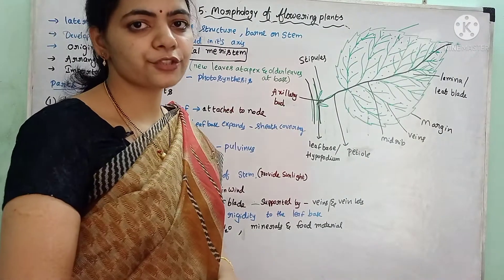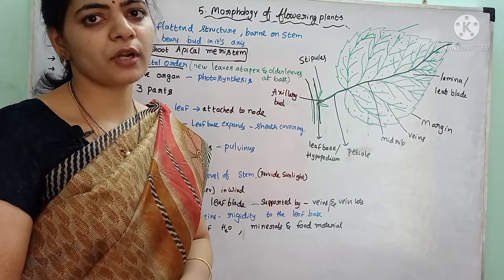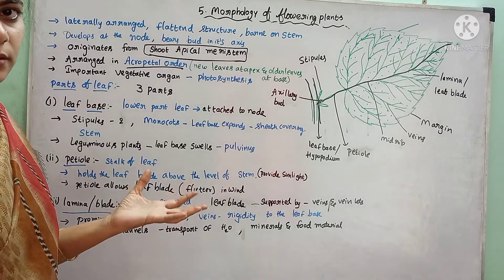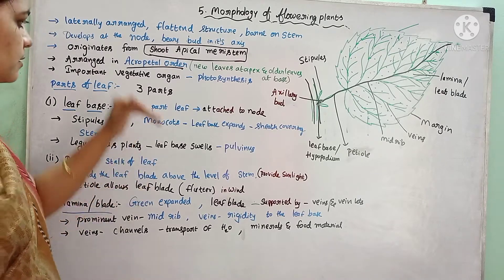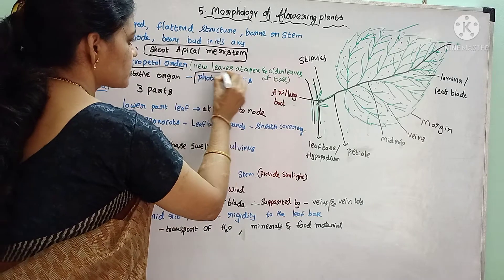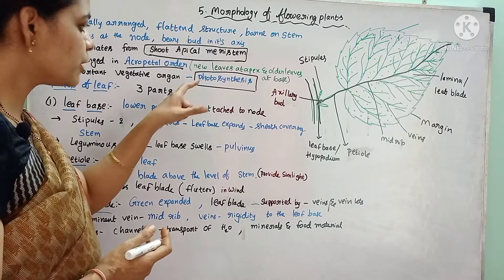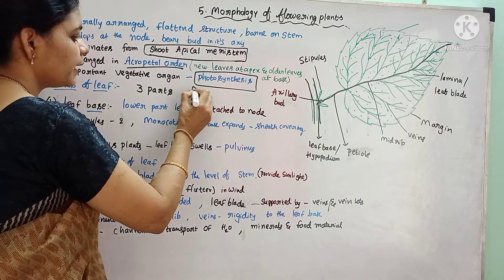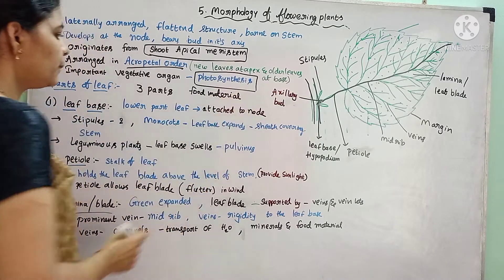The plant parts are divided into two parts: vegetative parts and reproductive parts. The flower is called the reproductive organ, and the remaining parts — root, leaf, and stem — are called vegetative parts. Among vegetative parts, the leaf is the most important vegetative organ, in which photosynthesis occurs. By using sunlight, the leaves are able to prepare food material.